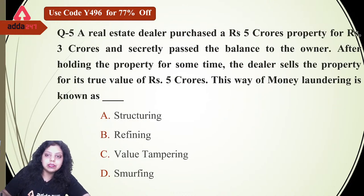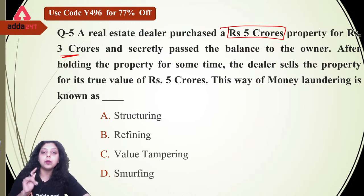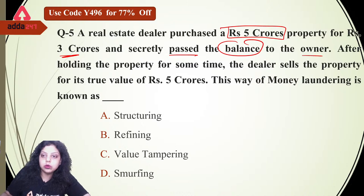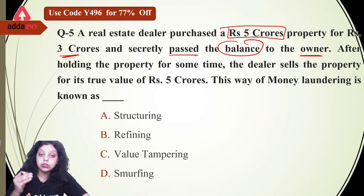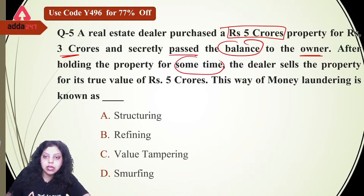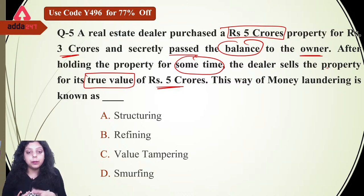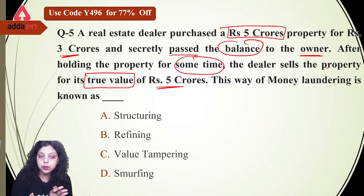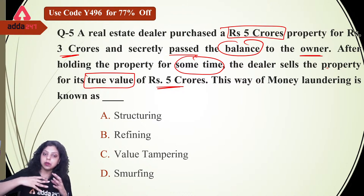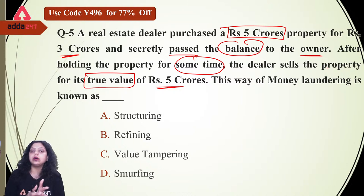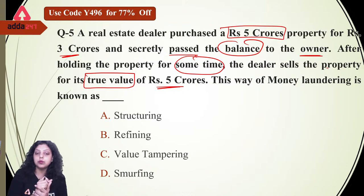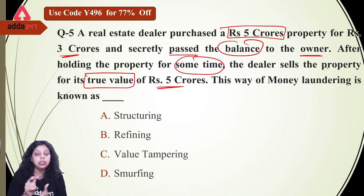A real estate dealer purchased a 5 crore property for 3 crores. The actual value of the property is 5 crores, but he purchased it for 3 crores and secretly passed the balance to the owner of the property. After holding the property for some time, the dealer sells the property for its true value of 5 crores. This way of money laundering is known as — is it structuring, refining, value tampering, or smurfing?